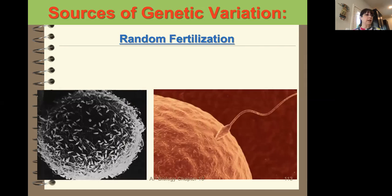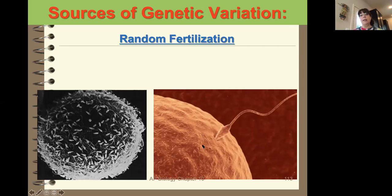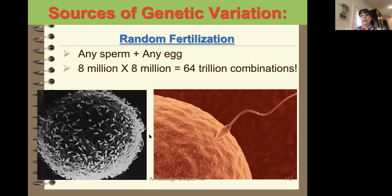The next way of getting genetic variation is random fertilization. There are millions of sperm that could fertilize one egg, and only one gets in and fertilizes it. When you do the math, it's about 64 trillion possible combinations, which continues variation.